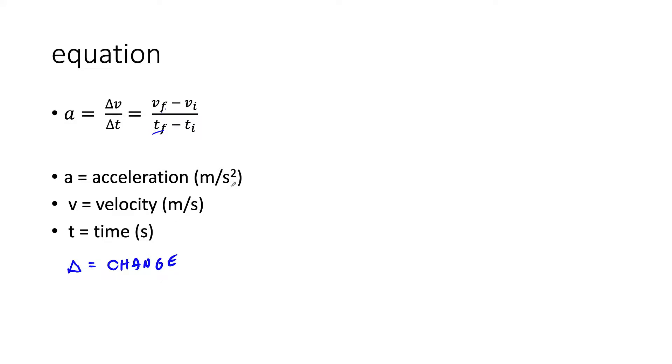Now we've got the units for each term here: meters per second squared for acceleration, meters per second for velocity, and time is just seconds. This is going to be important because this is what we need to have the answers in. Either meters per second squared if we're looking for acceleration, meters per second if we're looking for velocity, or seconds if we're looking for time.